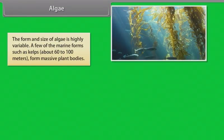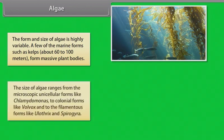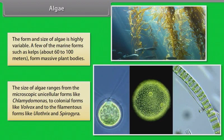The form and size of algae is highly variable. A few of the marine forms such as kelps, about 60 to 100 meters, form massive plant bodies. The size of algae ranges from the microscopic unicellular forms like chlamydomonas to colonial forms like volvox and to the filamentous forms like ulothrix and spirogyra.